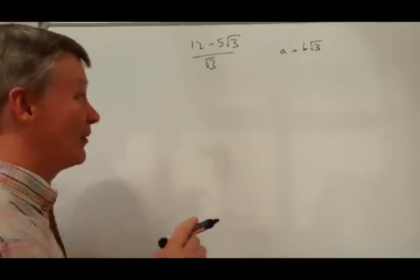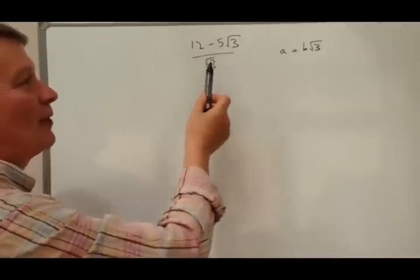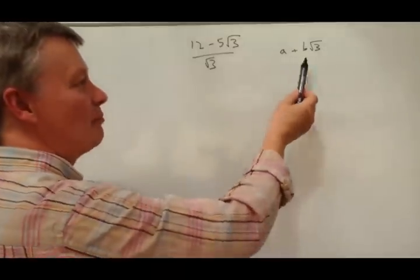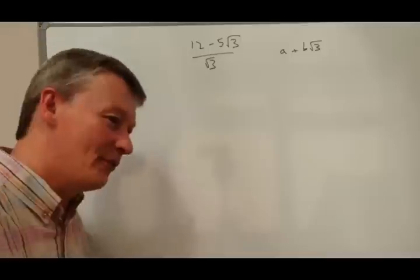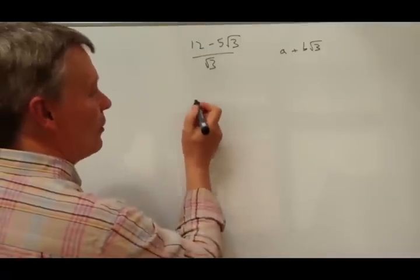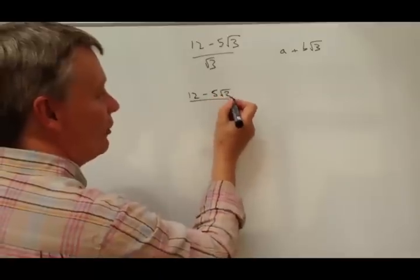We're being asked to express 12 minus 5 root 3 divided by root 3 in the form A plus B root 3. Here we go. What we're going to do is get rid of this denominator by multiplying the top and bottom by root 3.